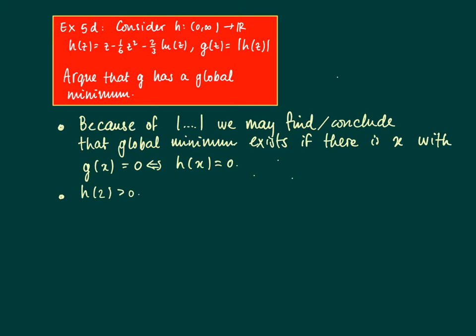We know that H(2) > 0. The limit as X→∞ of H(X) is the limit of X - (1/6)X² - (2/3)ln(X). We see that there are two parts in this expression that go to minus infinity: first, X - X².